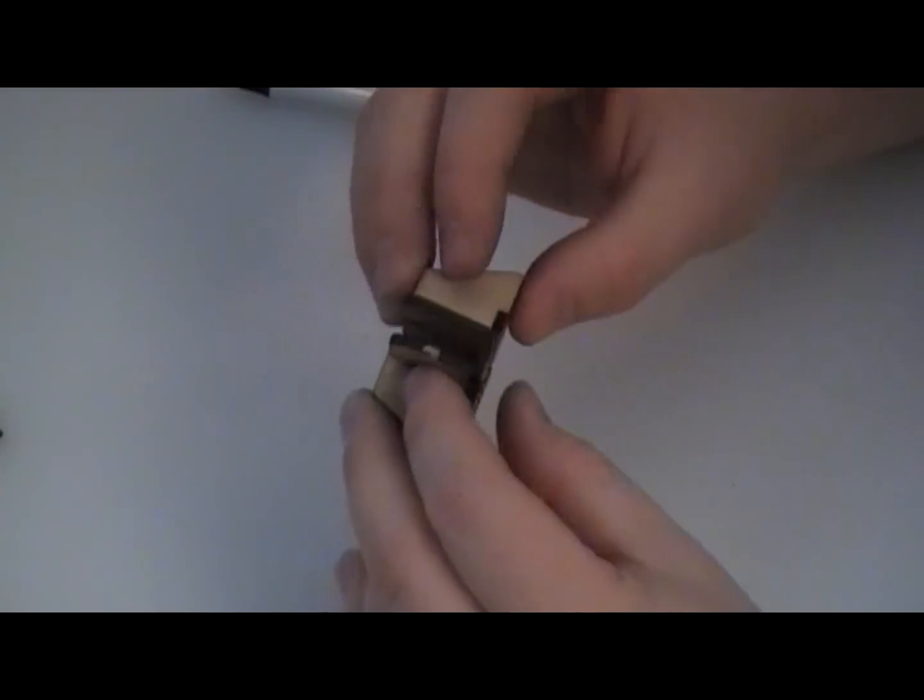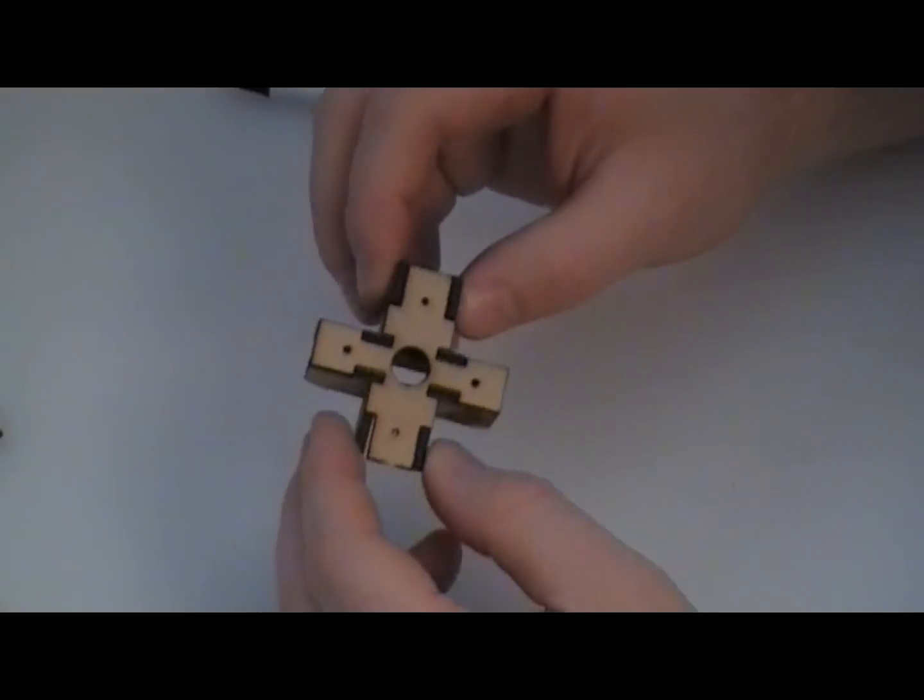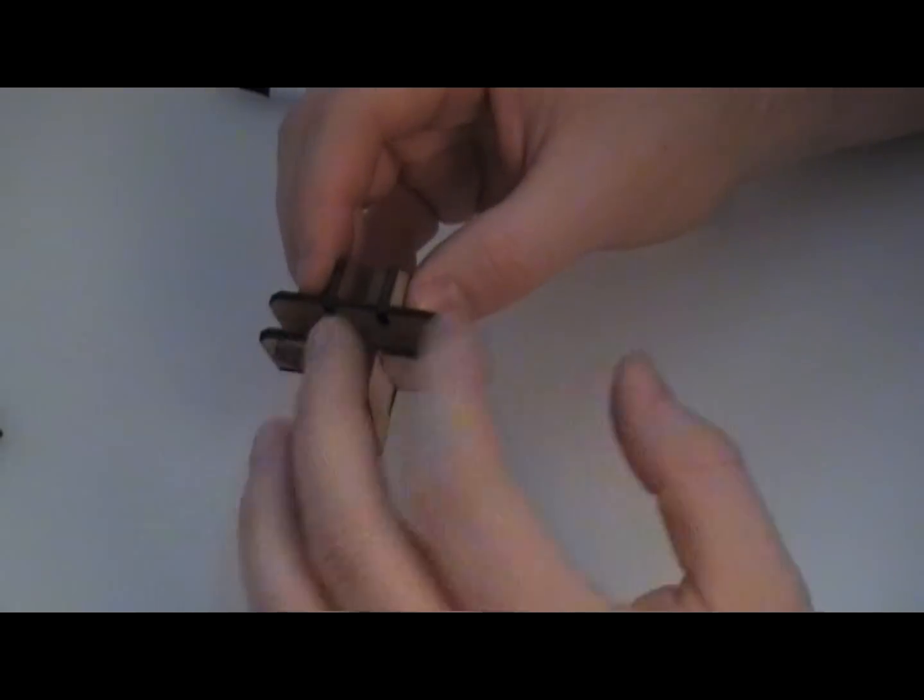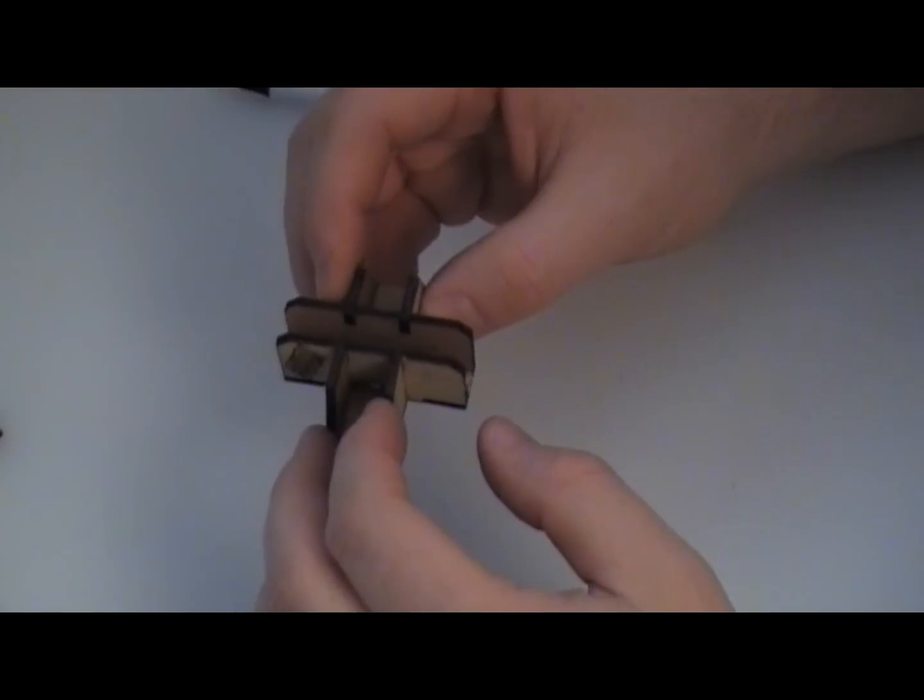Okay, so that's it. You can see it's pretty much self-jigging, so it just holds itself in place. So what I'm going to do now is take it apart. I'm going to put the glue in it, and then it'll be time to install on the airplane.